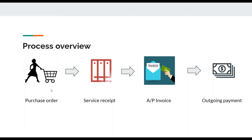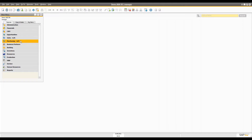The first is the purchase order, which is not mandatory but always good to create for tracking documents, reports, and payment reference. After making a purchase order, you get a service receipt. Based on that service receipt sent by the company from whom you bought the services, you get the invoice, copy that into your AP invoice, and based on that AP invoice the outgoing payment is generated.